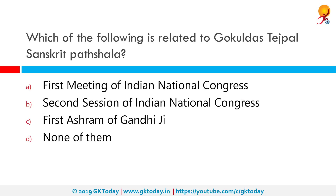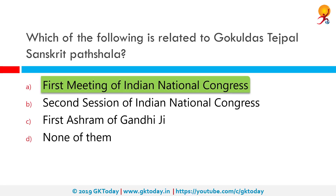Which of the following is related to Gokuldas Tejpal Sanskrit Paatshala? The first meeting of the Indian National Congress was organized by A.O. Hume at Gokuldas Tejpal Sanskrit College on 28 December 1885 in Bombay. Its first president was W.C. Bonerjee. It was the first organized expression of the Indian national movement on an all-India scale.